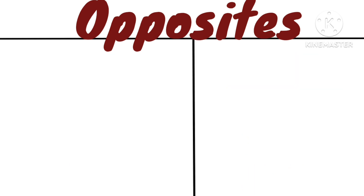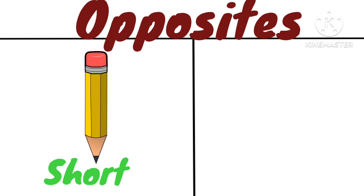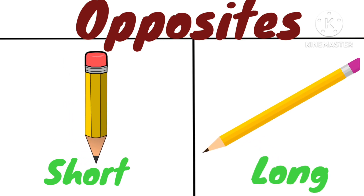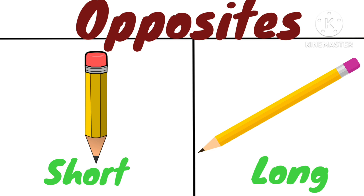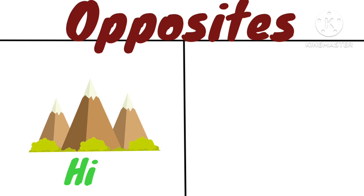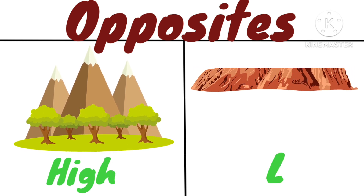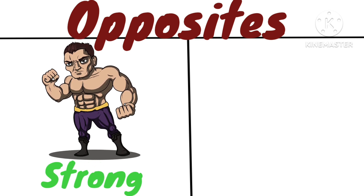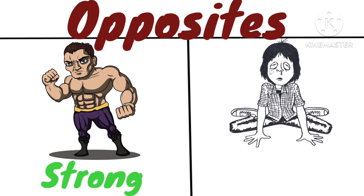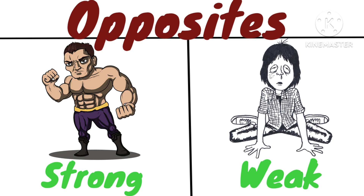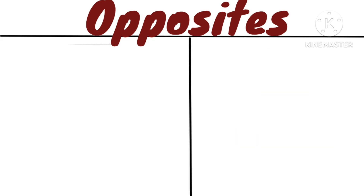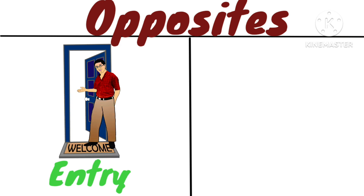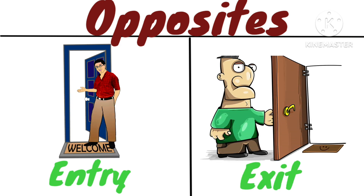Opposite of short is long — short pencil, long pencil. Opposite of high is low — high mountains, low plateaus. Opposite of strong is weak — strong man, weak man.